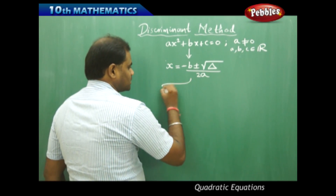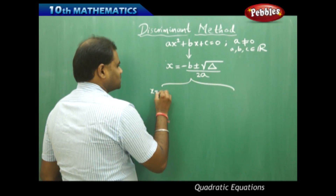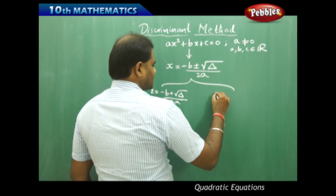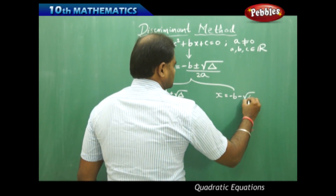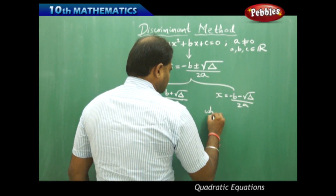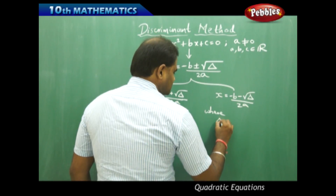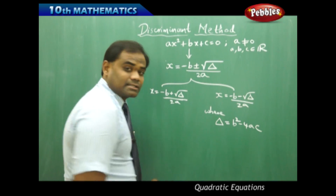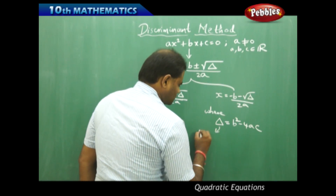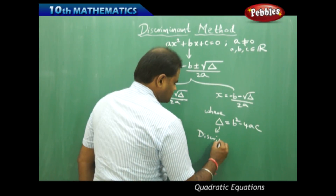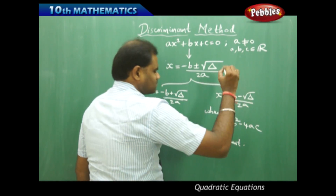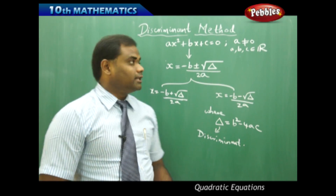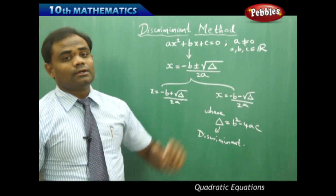Splitting the formula, one root is x equals minus b plus square root of delta, over 2a, and the other is x equals minus b minus square root of delta, over 2a. Here, delta is b squared minus 4ac, and this is called the discriminant. This is how we identify the formula for finding the solutions of any quadratic equation using the discriminant method.